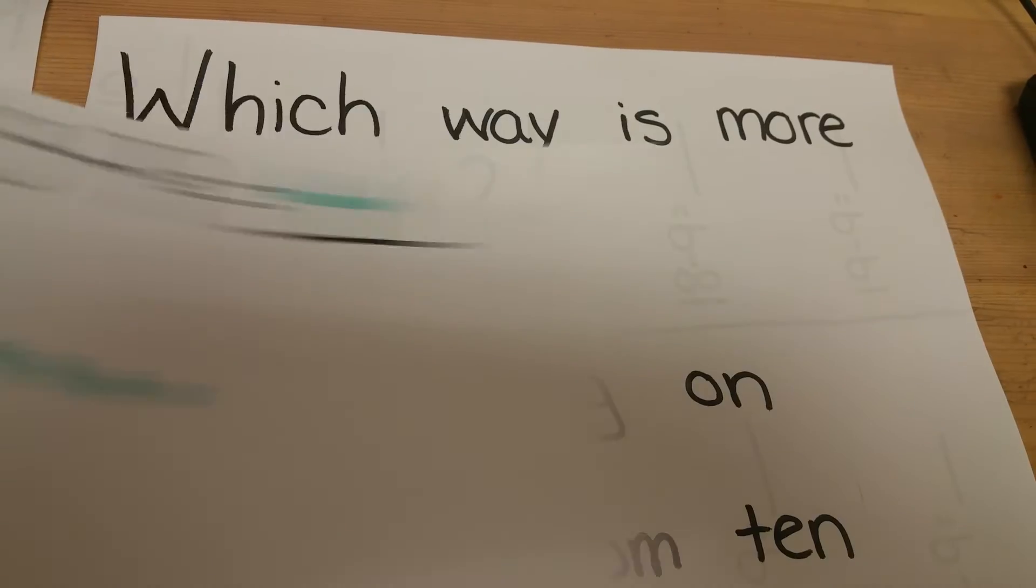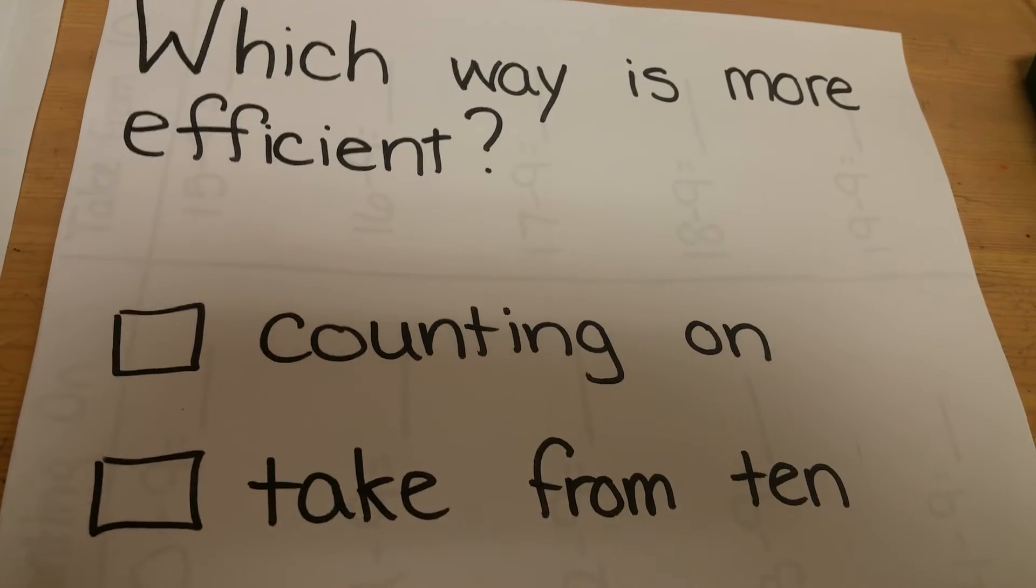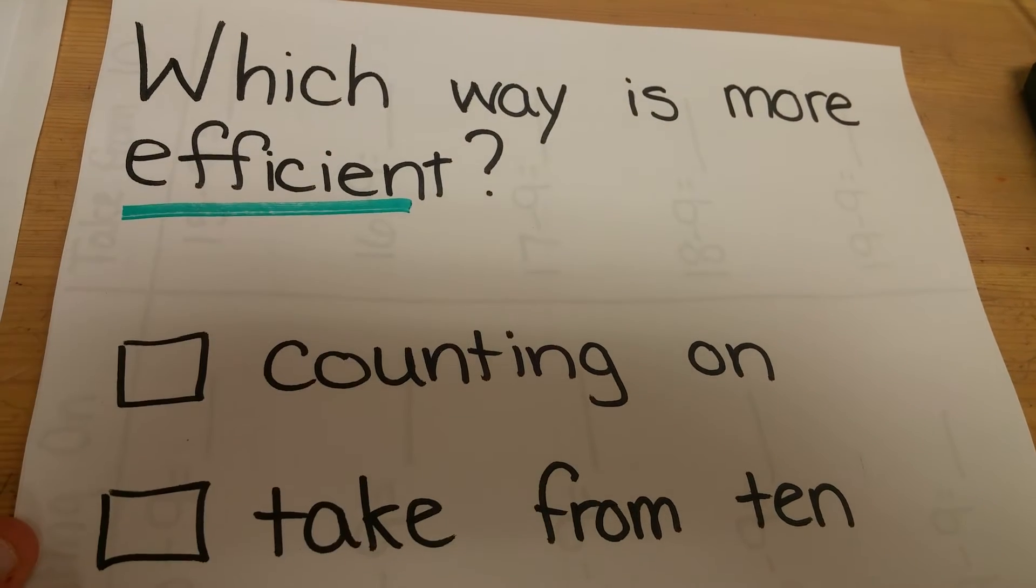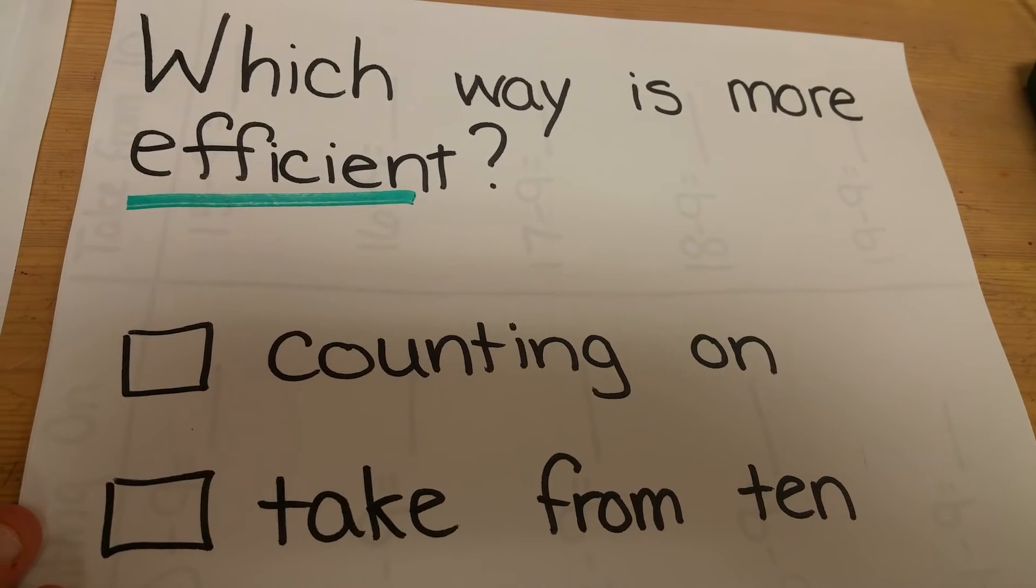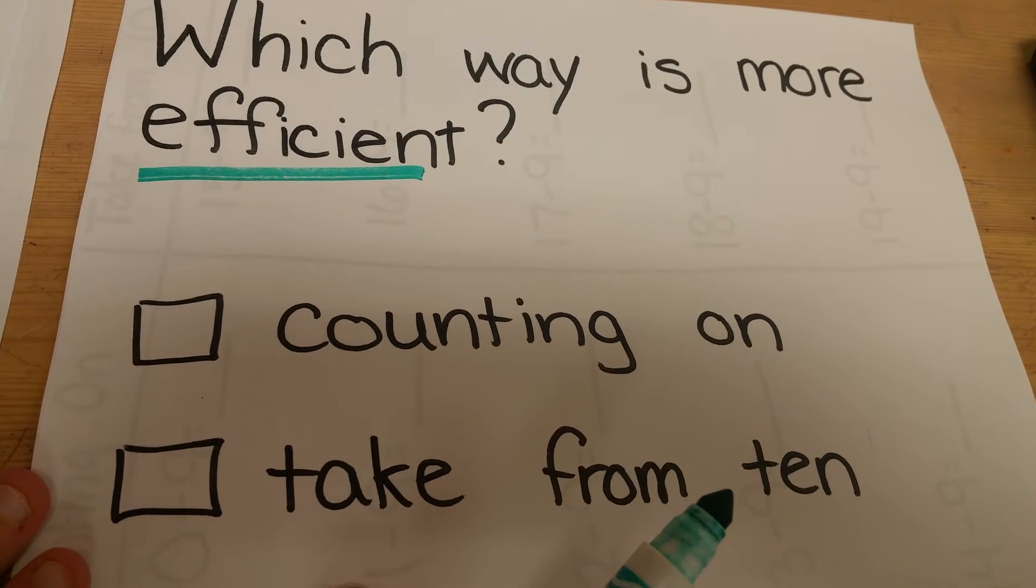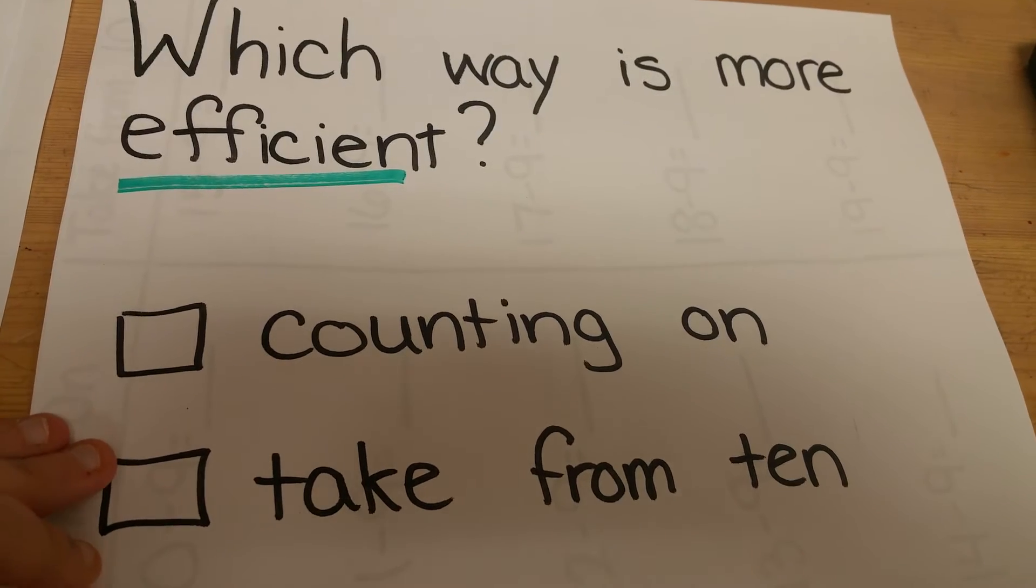Along with learning these two methods, the students are thinking which way is more efficient. We're always talking about being efficient, solving problems accurately but also quickly. So which method is more efficient? Counting on or take from 10? It depends on the numbers.